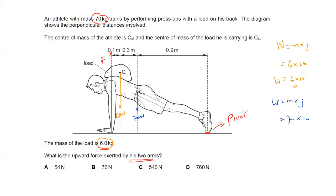First, identify the point of rotation — the pivot. Then show the arrows representing the direction of the forces. The weight always acts downward, so both the weight of the load and weight of the athlete act downward, while the upward force from the arms points up. Now: because of the load and weight of the athlete, which direction will the object tend to rotate — clockwise or anti-clockwise?